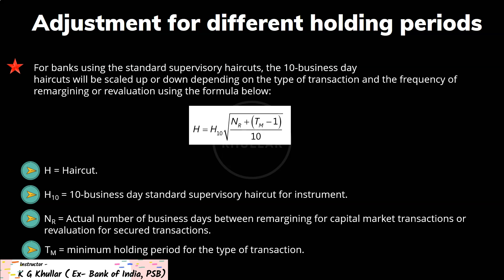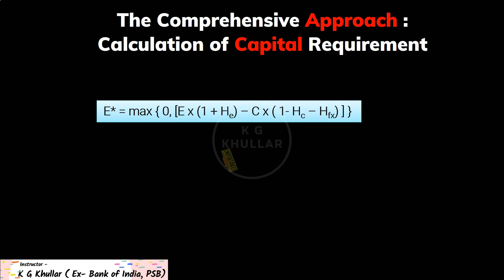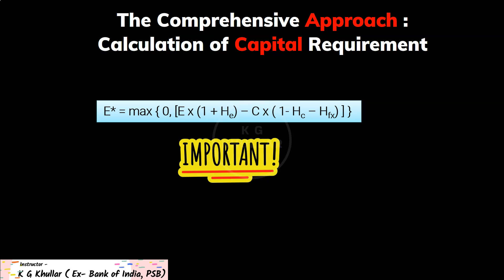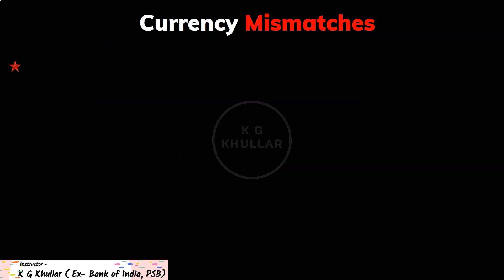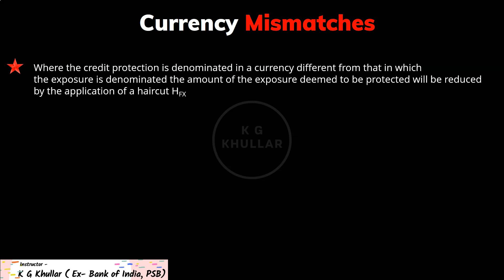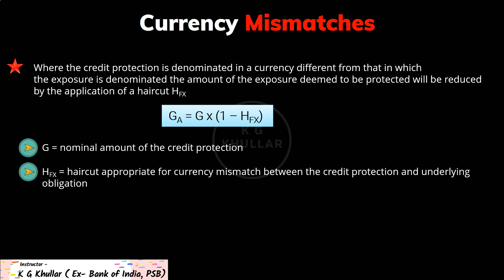Questions are rarely asked from the holding period scaling part in examination, but you should know the basic formulas in case a simple formula-based question appears. IIBF primarily focuses around the calculation of exposure value after risk mitigation, that is the E* formula. For currency mismatches, where credit protection is denominated in a currency different from the exposure, the amount deemed protected is reduced by applying a haircut HFX: GA = G × (1 − HFX), where G is the nominal amount of credit protection and HFX is the haircut appropriate for currency mismatch between the credit protection and the underlying obligation.